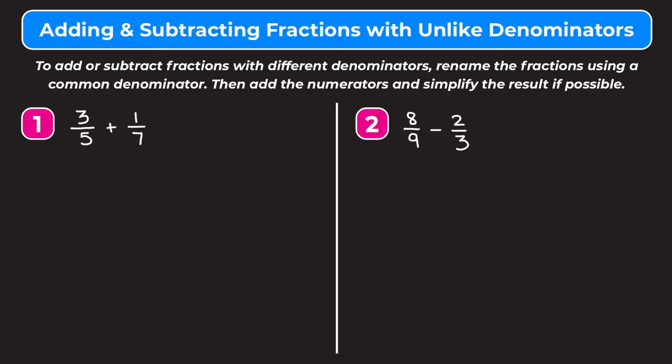Example 1 is 3 fifths plus 1 seventh. The most important thing to remember when adding or subtracting fractions is that you have to have fractions with the same denominator. You cannot just add the numerators and add the denominators. We first have to find a common denominator by finding a common multiple between the two given denominators, and we typically want to find the least common multiple because it'll just make our lives the easiest.